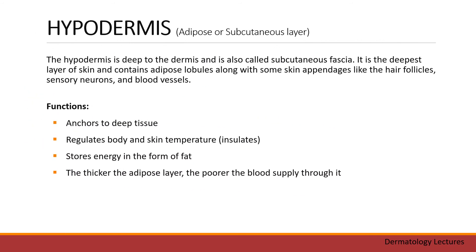The hypodermis, also called subcutaneous fascia, lies deep to the dermis. It is the deepest layer of the skin and contains adipose lobules along with some skin appendages like hair follicles, sensory neurons, and blood vessels. Its functions are anchoring to deep tissue, regulating body and skin temperature, and storing energy in the form of fat. The thicker the adipose layer, the poorer the blood supply through it.